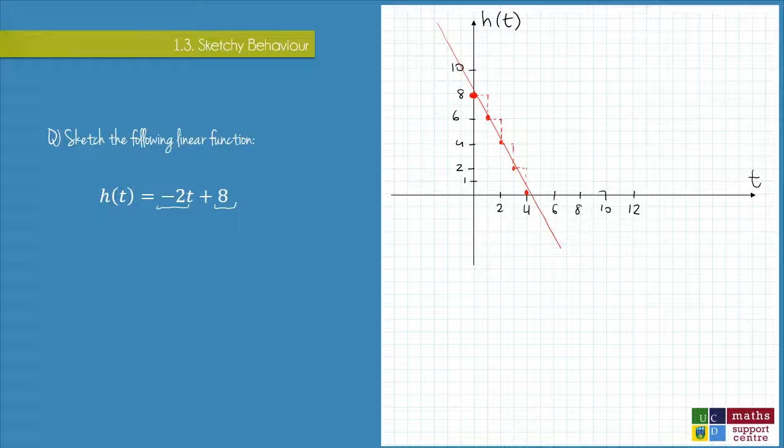And the most convenient point to find is usually the x-intercept, or in this case, it will be the t-intercept, so where the line crosses the horizontal axis.